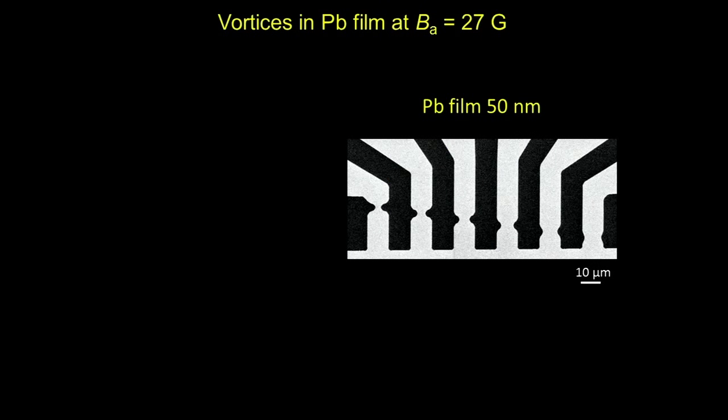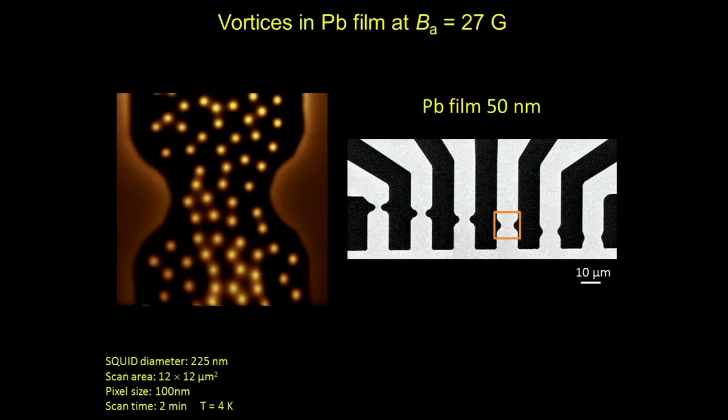The first part of the talk is about vortices. The sample we've been looking at is a lead film — you can see it in an SEM picture — patterned into six constricted bridges shown in light gray, with the silicon substrate in dark gray. If you look at one of these constrictions with our microscope with an external applied field — lead is a superconductor at four kelvin — you see a bunch of vortices. Vortices are interesting to study for all sorts of reasons: you can think about dissipation as the normal core moves into the superfluid.